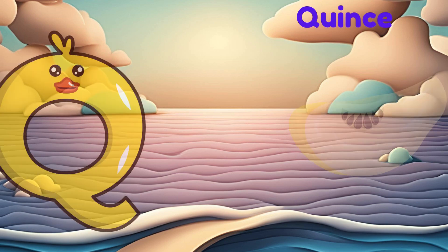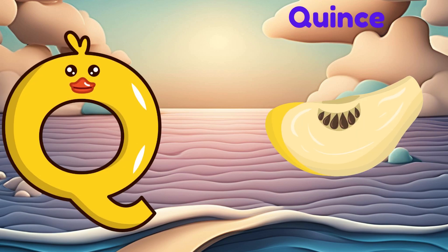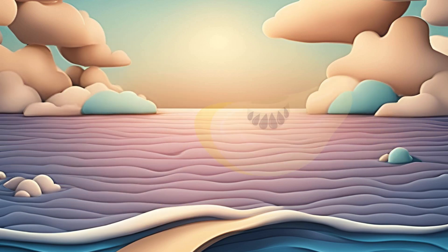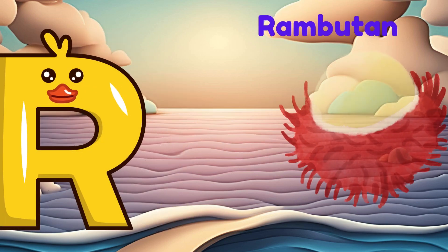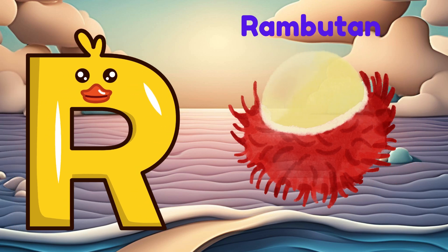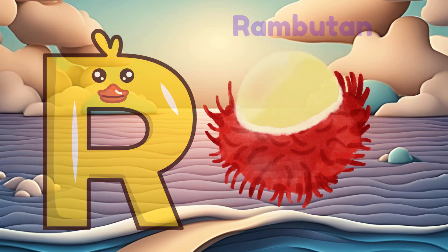Q is for quince. Quh, quh, quince. R is for rambutan. R, r, rambutan.